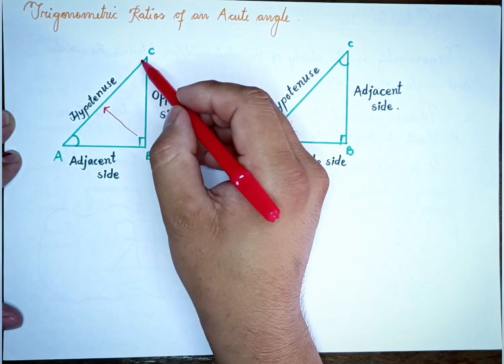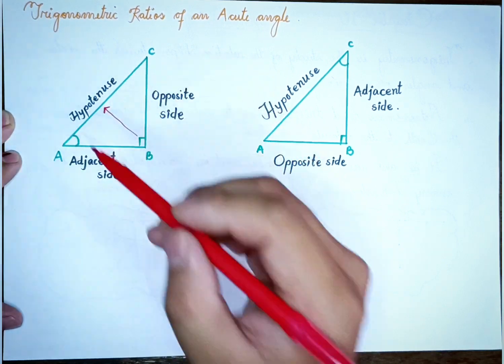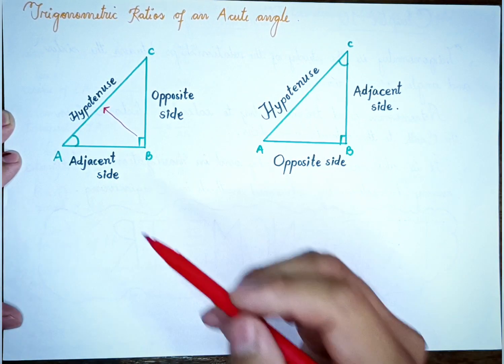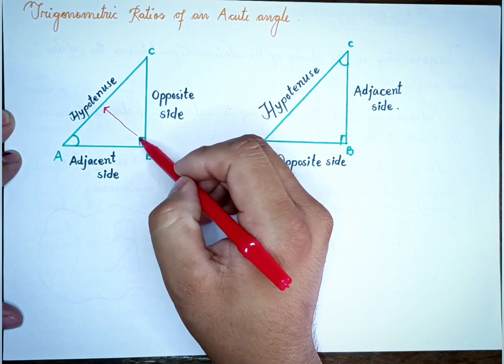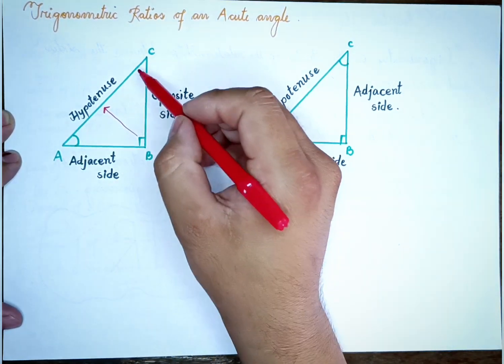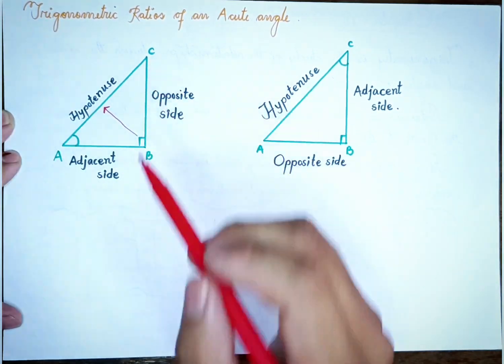The parts of a right triangle include the opposite side, the base, and the hypotenuse. The right angle of the triangle, and the angles A and C, help define these sides.